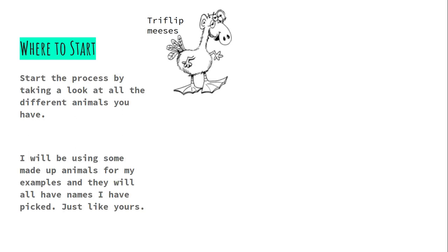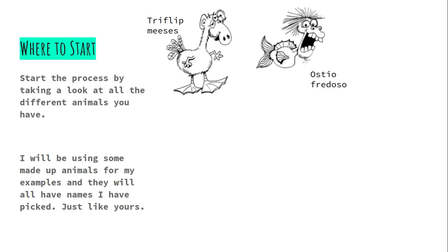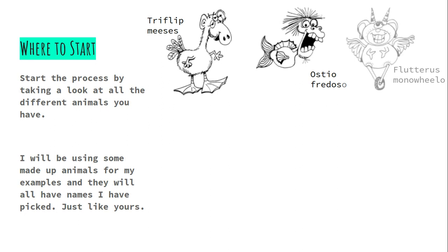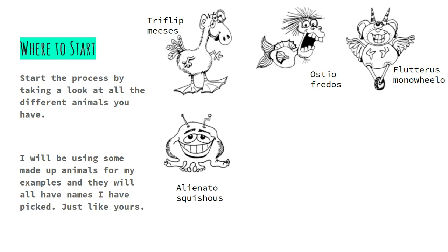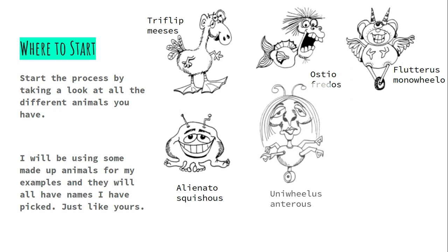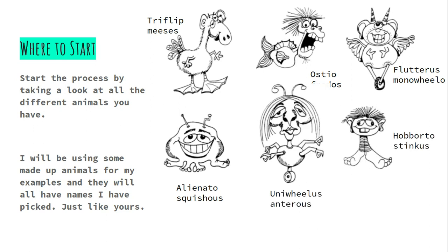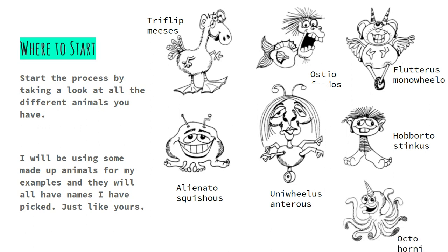So I'd like you to meet Triflip Mises, Osteofredoso, Flutteris Monoheelo, Alienato Squishis, Unowheelis Antorus, Haborto Stinkus, and last but not least, Octohornei. These are my seven creatures that I'm going to be creating a dichotomous key for.